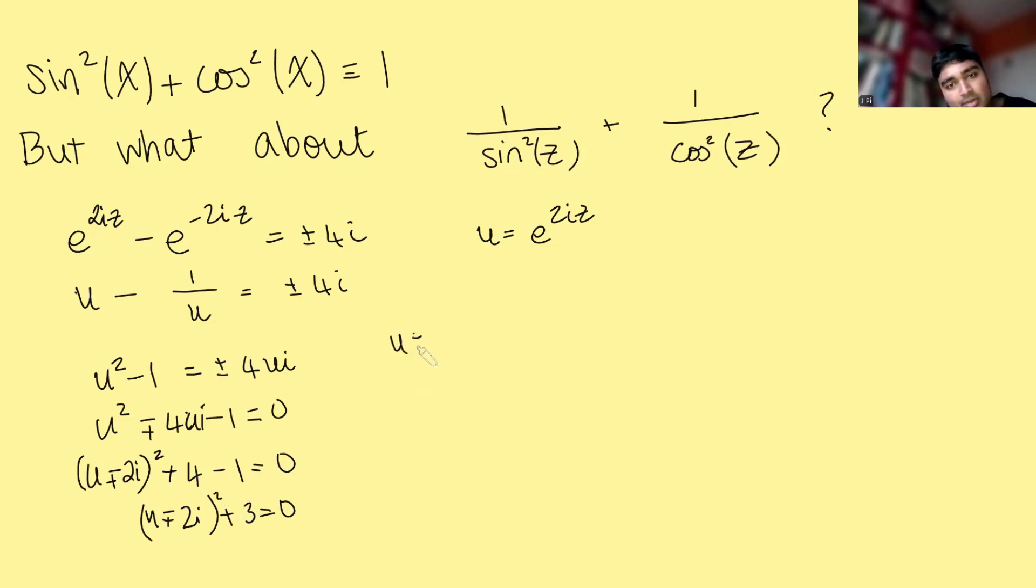So if I bring this over here, U minus or plus 2i is the square root of minus 3, which is going to be root 3i, plus or minus root 3i. And so therefore, U is one of four things.